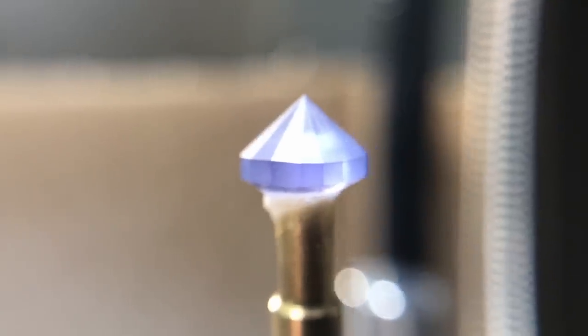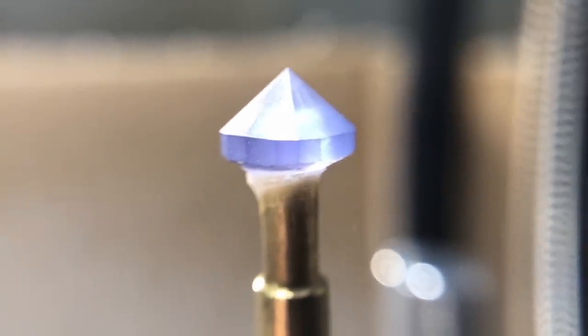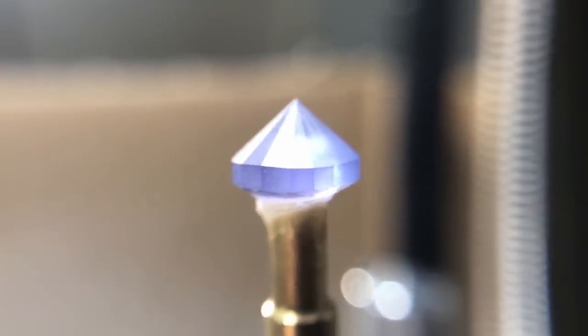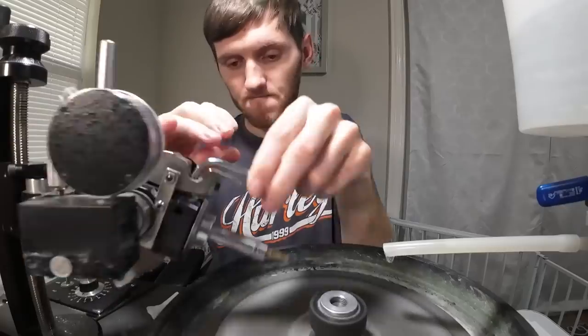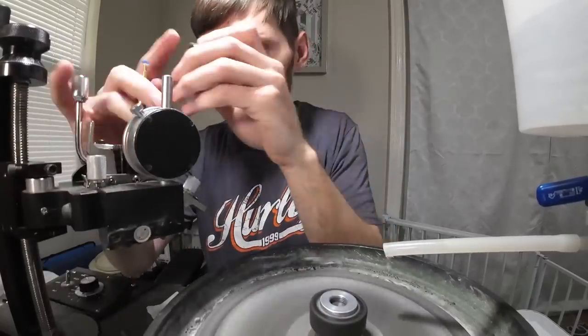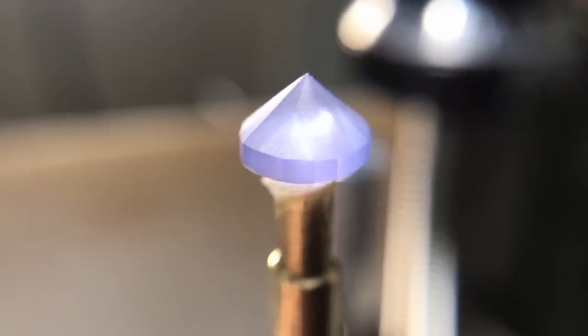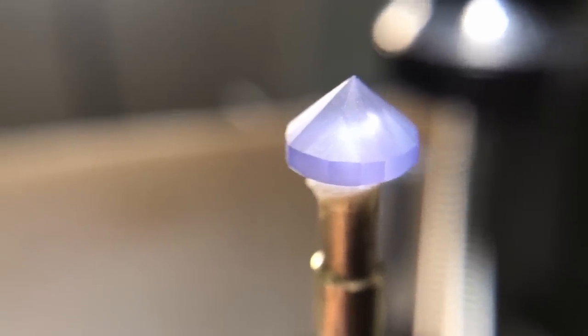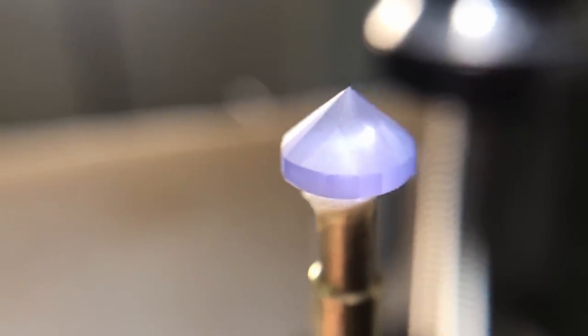Here it is now that the girdle's cut in and I'll just go cut in that last tier of facets and I'll be ready for pre-polish. Now that last tier's cut in, we'll switch to our pre-polish and get it pre-polished.